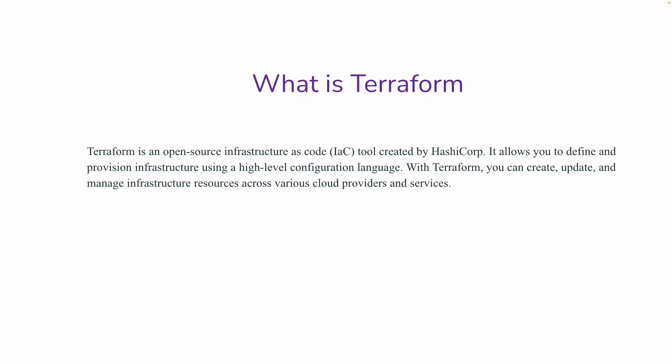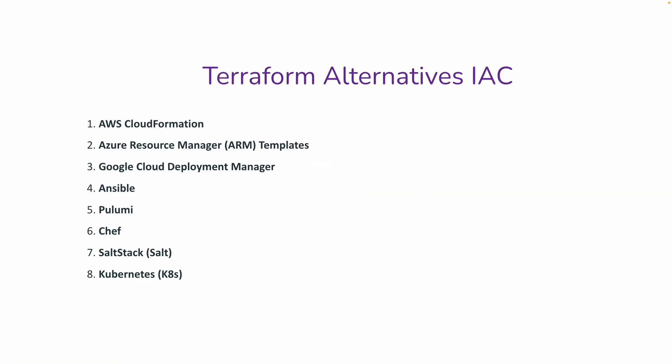Terraform alternatives for infrastructure as code include: AWS CloudFormation, Azure Resource Manager ARM templates, Google Cloud Deployment Manager, Chef, Salt Stack, and Kubernetes.